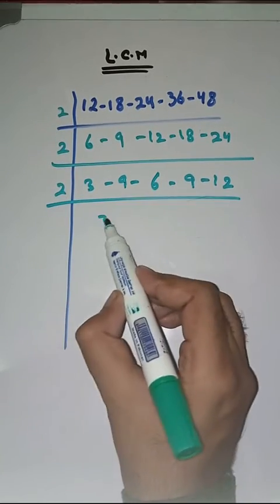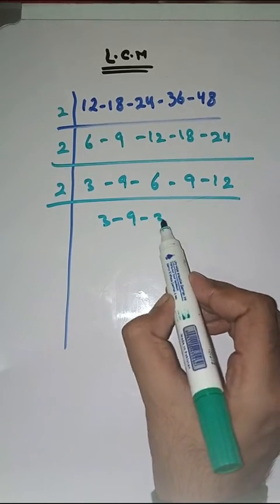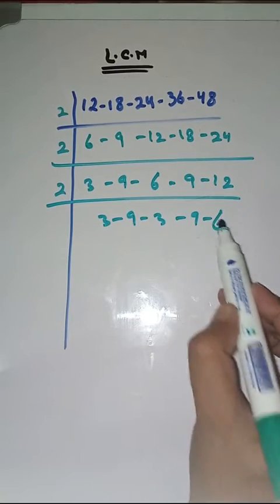Again with 2. 3 as it is, 9 as it is, 2 3s are 6, 9 as it is, 2 6s are 12.